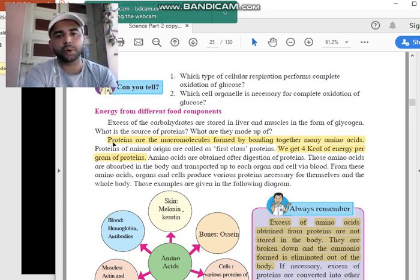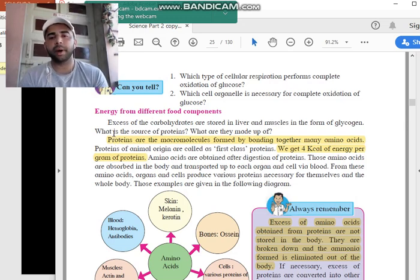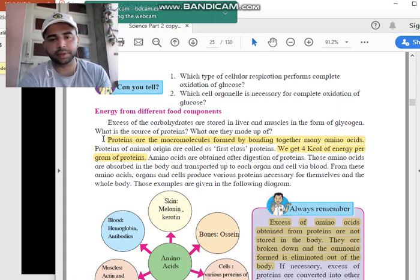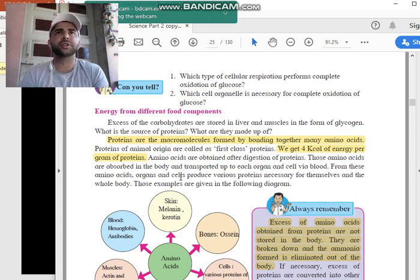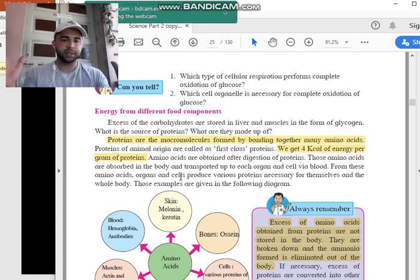Now what are proteins? Proteins are macromolecules formed by bonding together many amino acids. Proteins are actually a chain of amino acids. You must have studied this in your, you must know what are macromolecules and what are micro molecules.